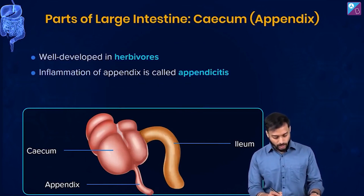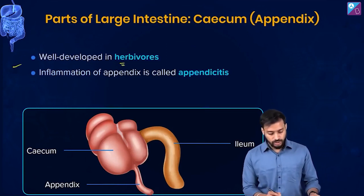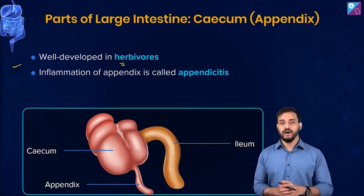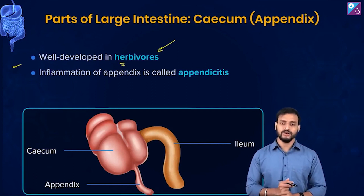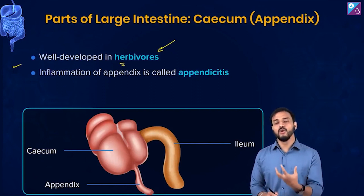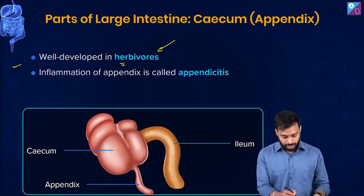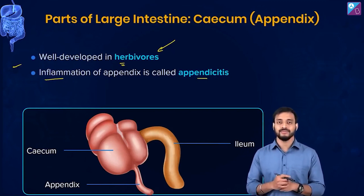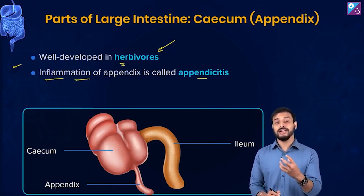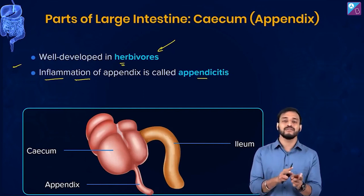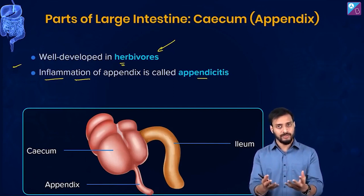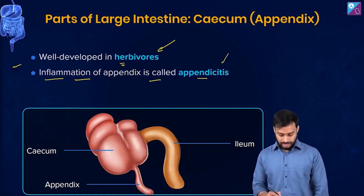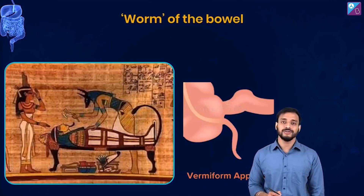The cecum is quite well developed in herbivores. Here's a homework for you: try to find out the reason why it is more developed in herbivores. Inflammation of the appendix is called appendicitis. At times this appendix has to be cut off or operated out, and this condition is known as appendicitis.